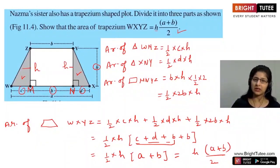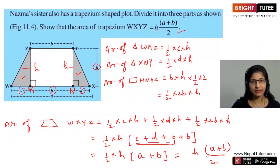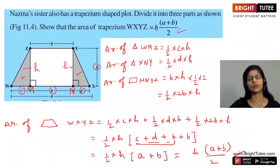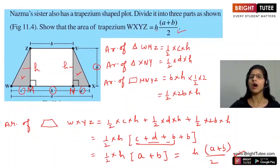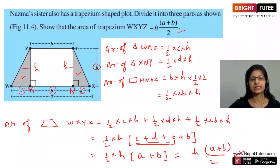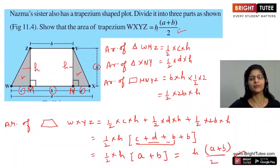When we divide the trapezium into triangles and a rectangle, at the end we get the same formula. So whenever we are given questions on a trapezium, we don't need to find areas of individual triangles and the rectangle — we can just apply the formula: half into height into sum of parallel sides.